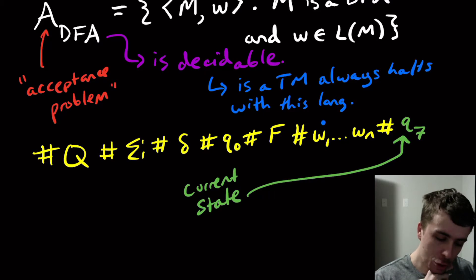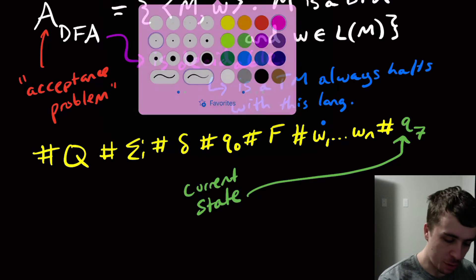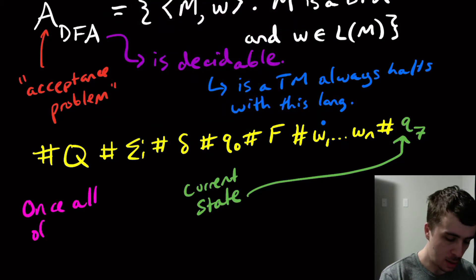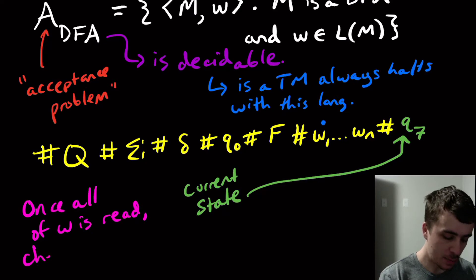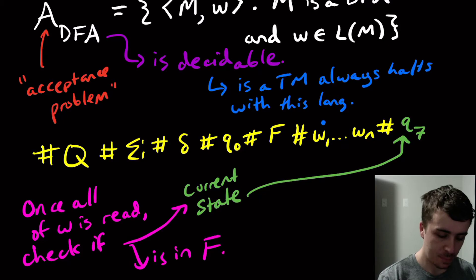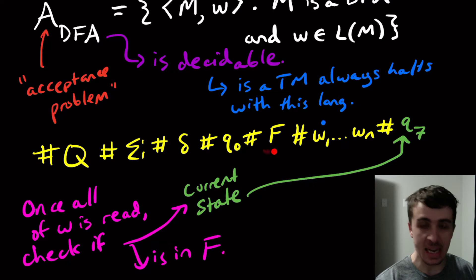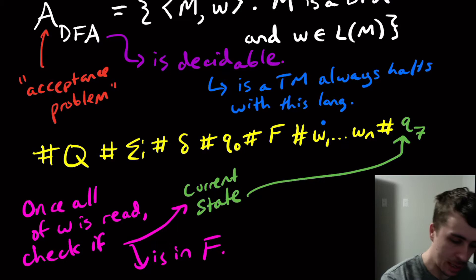So what do we actually do here? Well, once we have read the whole thing, so once all of w is read, then we just check if this state is in f. So if this state, wherever we ended up, is in f right here, then we know we have accepted the input or the DFA accepts that input. And so we can immediately go to q accept.